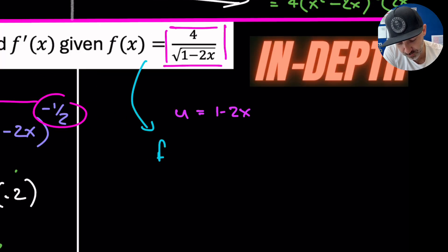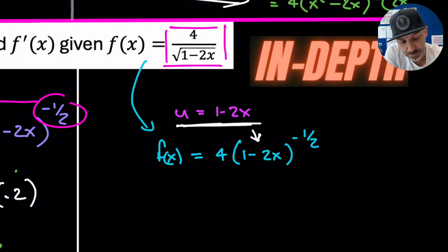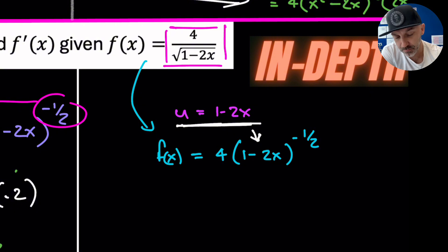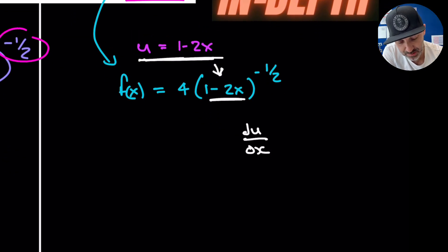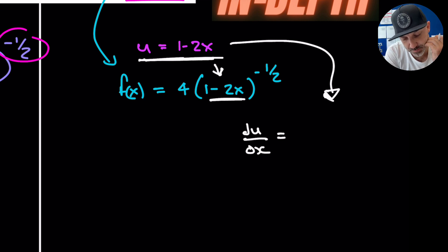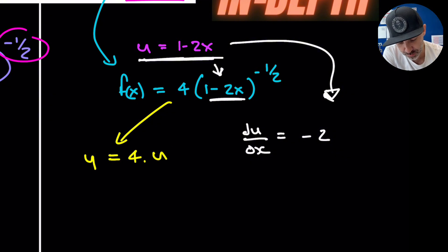For the slightly longer method, we first rewrite in index form: 4(1 − 2x)^(−½). Looking ahead, the substitution for u is 1 − 2x, because for the chain rule to work u must be the expression inside the brackets. Differentiating u with respect to x gives du/dx = −2. Rewriting in terms of y and u, we have y = 4u^(−½).